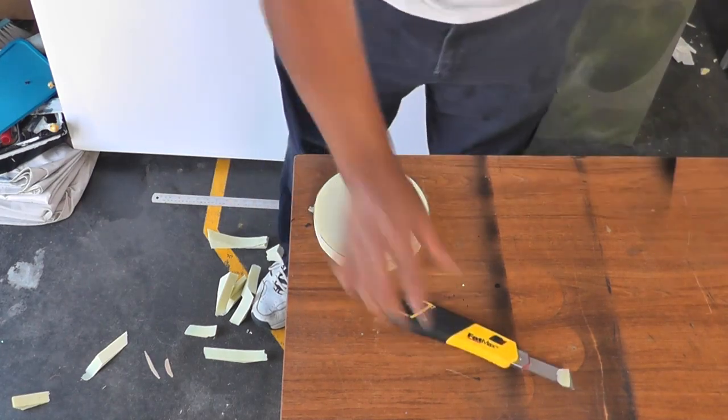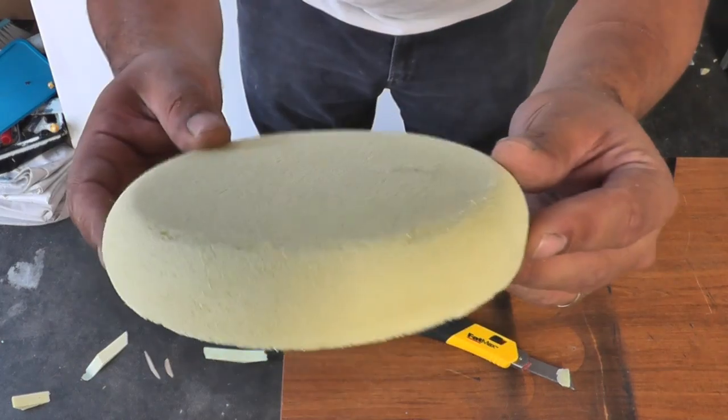So let's have a look at how I round off the edges like on this piece here. It's pretty simple.